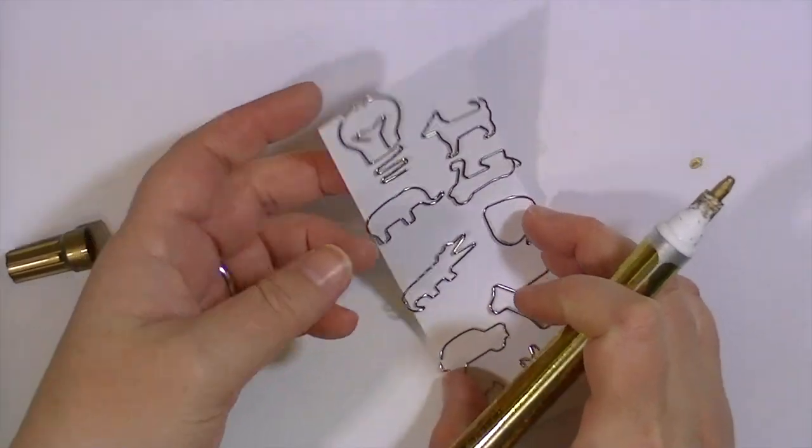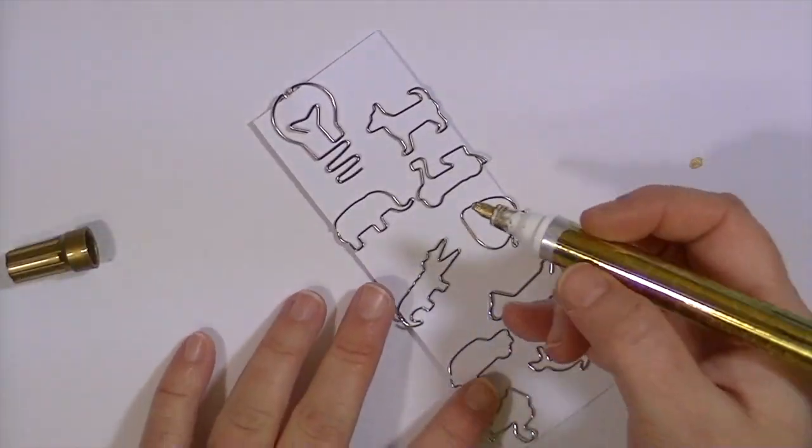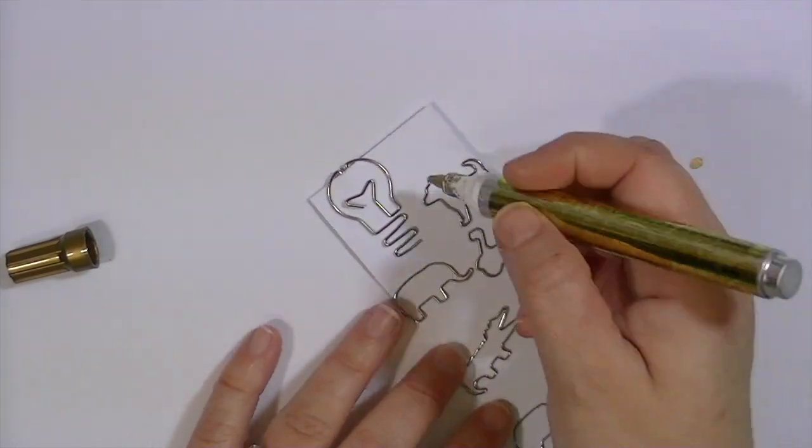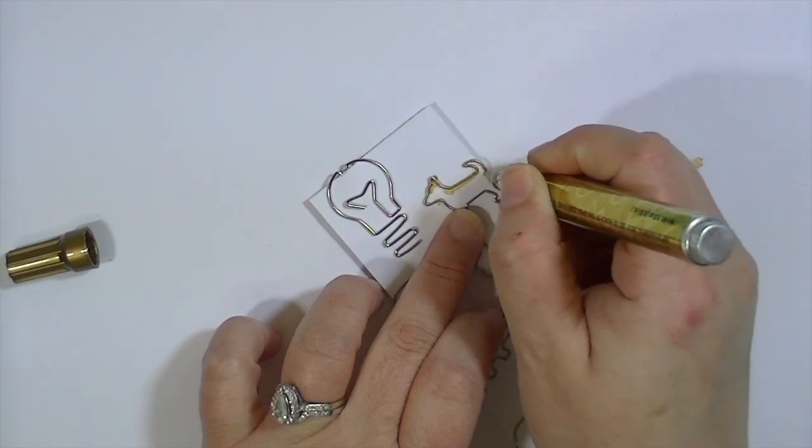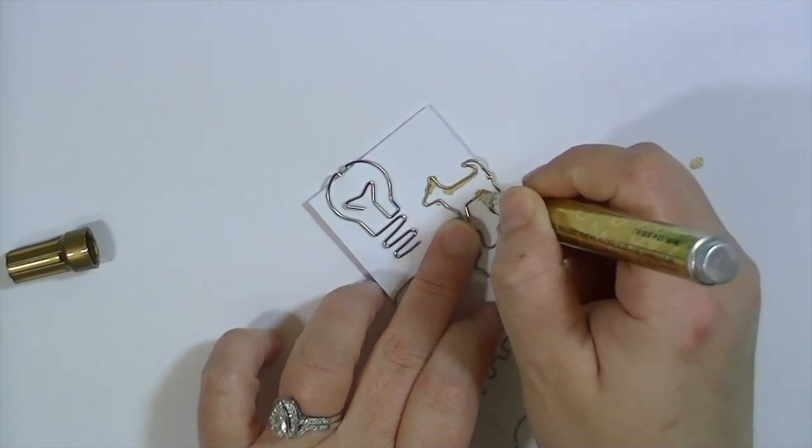You're just going to want to get started, kind of tap it on your work surface to get it moving. I just put the paper clips onto a piece of scratch paper. It just makes them easy and it holds them in place and I am simply going to color them.